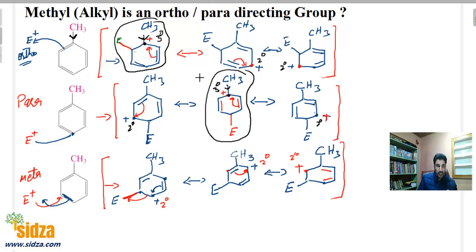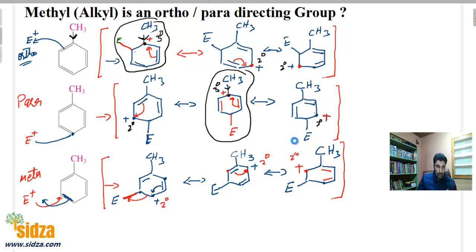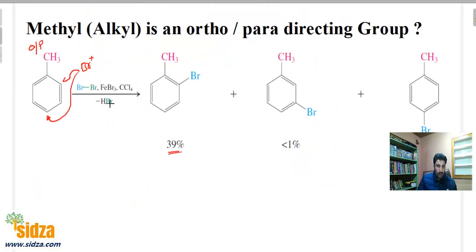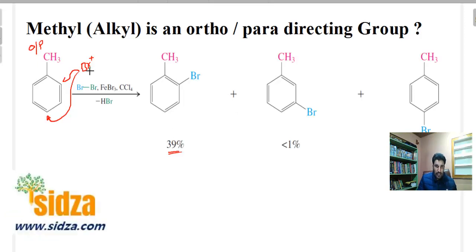So when the electrophile attacks on the ortho and para positions, among the resonating structures you get two secondary and one tertiary carbocation. For meta attack, all three intermediates are secondary carbocations. We know the order of stability: tertiary is more stable than secondary, secondary more than primary. So when the electrophile attacks on the meta position, you don't get very stable intermediates. The carbocation is not so stable in the meta case. That's why the electrophile preferentially attacks on the ortho and para positions, where you get a more stable intermediate.